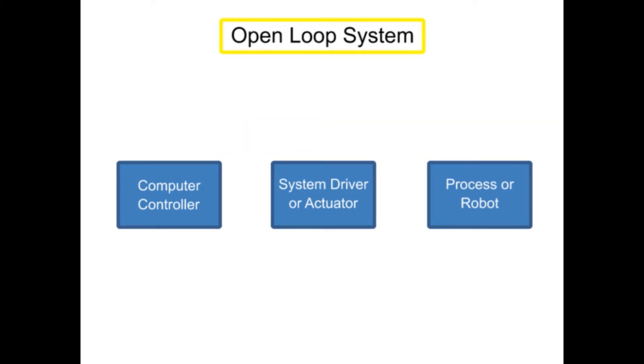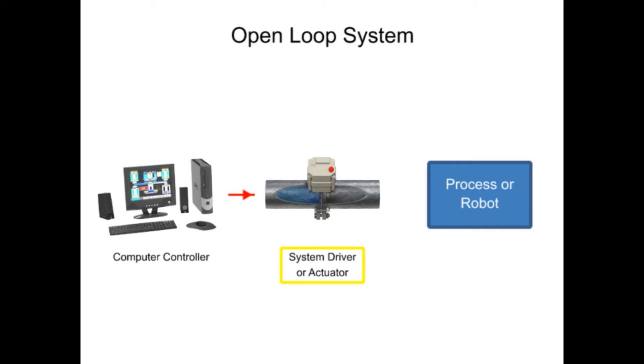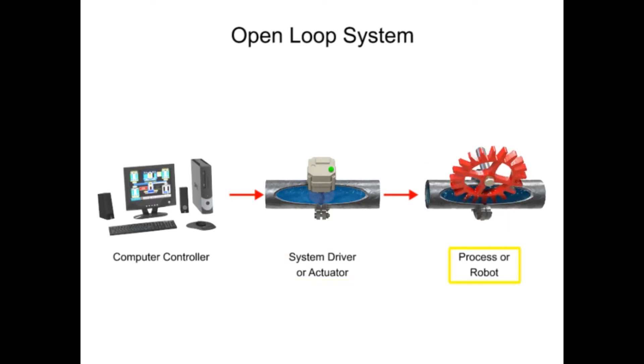In open-loop control systems, signals are first sent by a computer controller to the system driver. The system driver then converts those signals into an operation for the process or robot to perform. The system driver can be anything from a pneumatic actuator, a hydraulic flow valve, or an electrical controller.